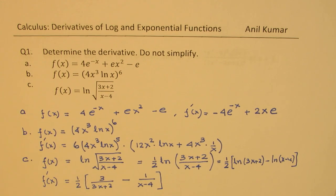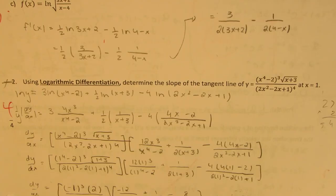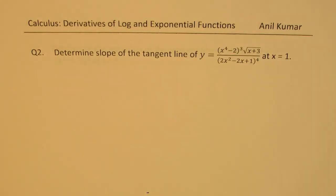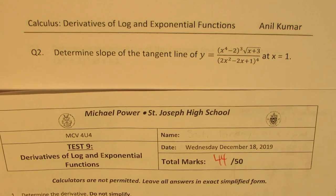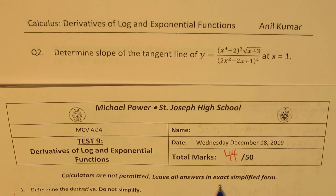Now let's move to question number 2. The question is: determine the slope of the tangent line of y equals (x to the power of 4 minus 2) cubed times the square root of (x plus 3), divided by (2x squared minus 2x plus 1) to the power of 4, at x equals 1. I would like you to pause the video, answer this question, and then look into my suggestions. This should be done without a calculator — calculators are not permitted. You can leave your answer in exact simplified form.